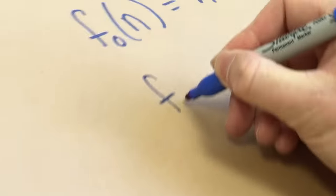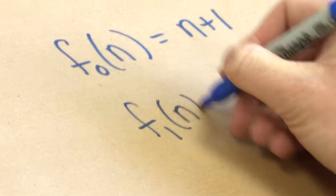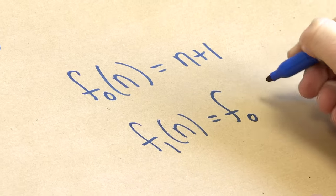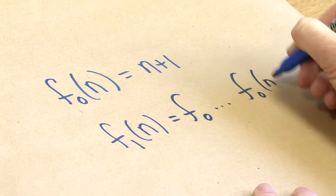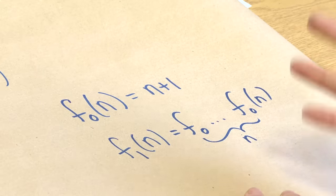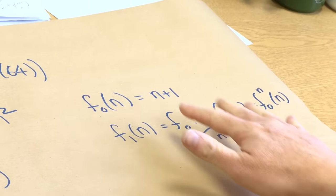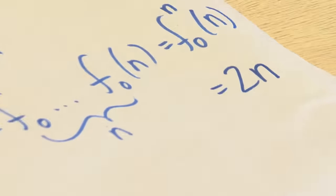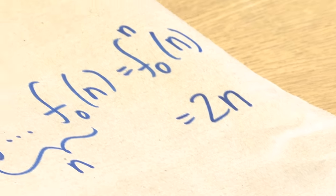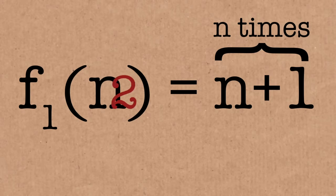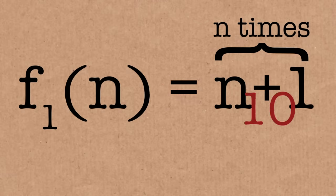The successor function is the seed for all these fast-growing hierarchies. We can define F1 by doing F0 n times on n — that's adding 1 to n a total of n times, which takes us to 2n. So F1 is a doubling function. It's growing more quickly than the successor, since this one was just adding 1 each time, while this one is now doubling. And we've built it from that successor seed.